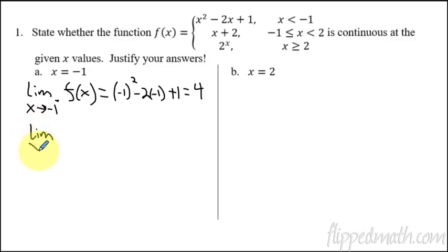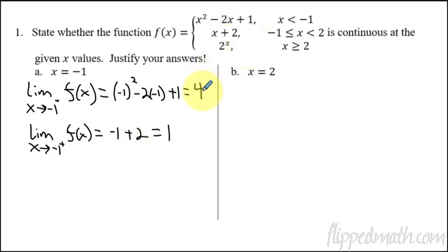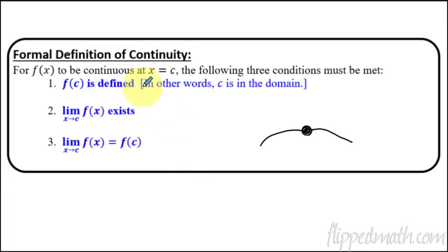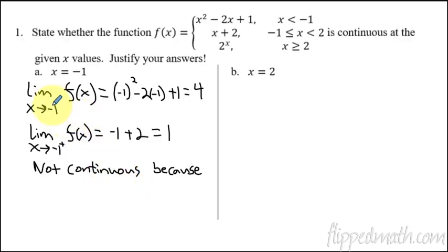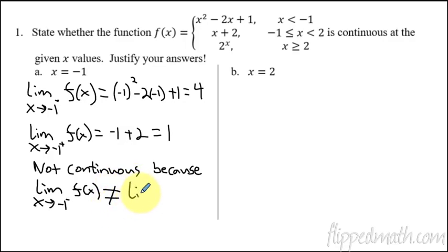Now let's check the right side. The limit as X approaches negative one from the right of F of X — we plug negative one into the second piece: negative one plus two, which equals one. The two pieces do not come together — one side gives a Y value of four, the other gives one. So it is not continuous because the limit does not exist; the left and right side limits as X approaches negative one are not the same.